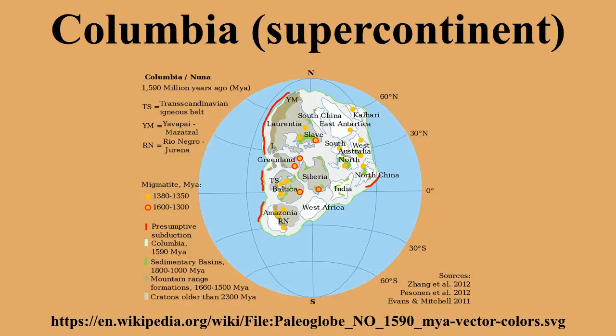Columbia began to fragment about 1.6 Ga ago, associated with continental rifting along the western margin of Laurentia, eastern India, southern margin of Baltica, southeastern margin of Siberia, northwestern margin of South Africa, and northern margin of the North China block. The fragmentation corresponded with widespread anorogenic magmatic activity, forming anorthosite-mangerite-charnockite-granite suites in North America, Baltica, Amazonia, and North China, and continued until the final breakup of the supercontinent at about 1.3–1.2 Ga, marked by the emplacement of the 1.27 Ga McKenzie and 1.24 Ga Sudbury-Matachewan dike swarms in North America.